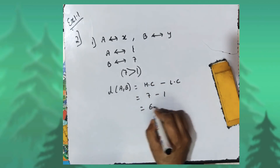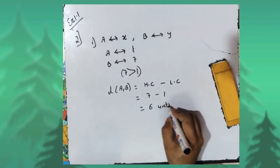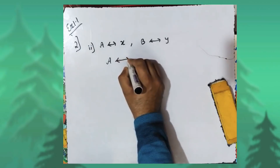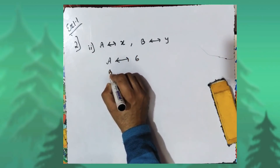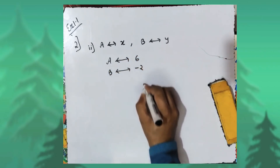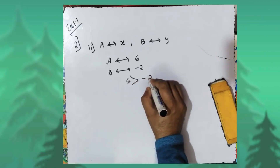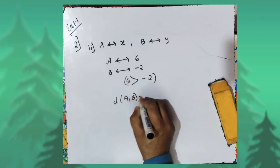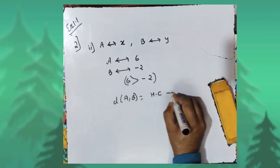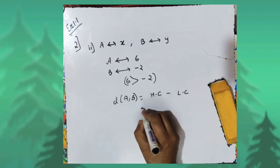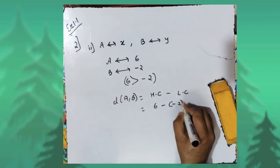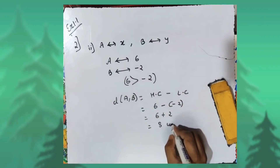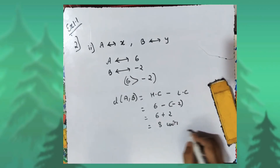Seven minus one equals six units. In the second sub-part, coordinate of A is six and coordinate of B is minus two. Six is greater than minus two, so distance AB equals higher coordinate minus lower coordinate: six minus minus two, which is six plus two, equals eight units.